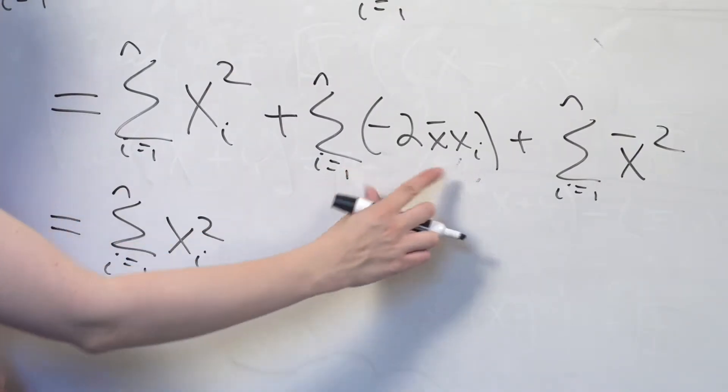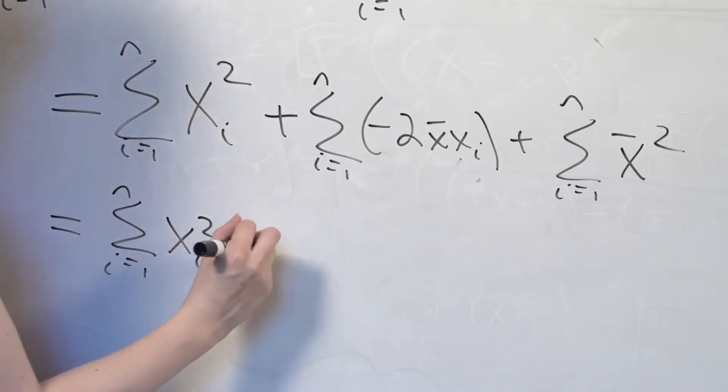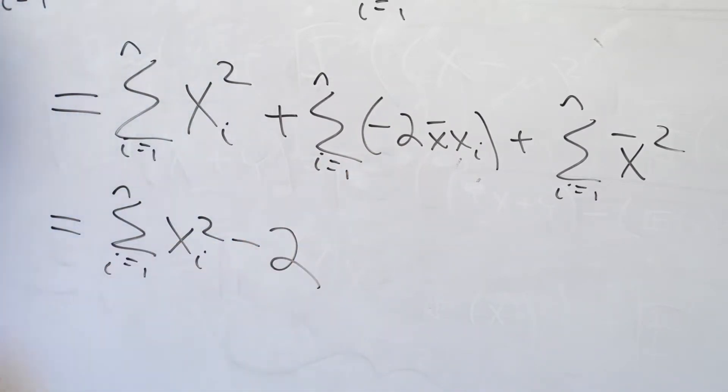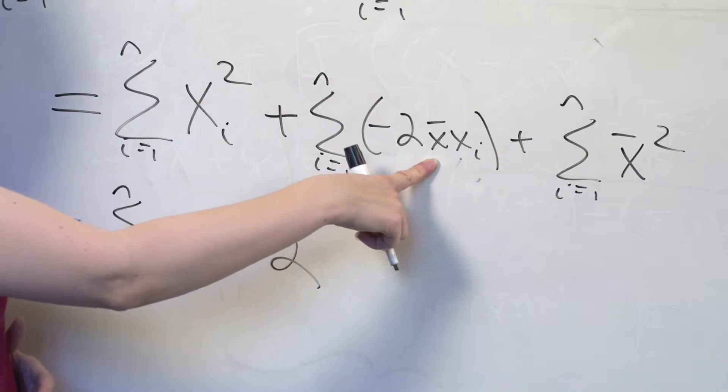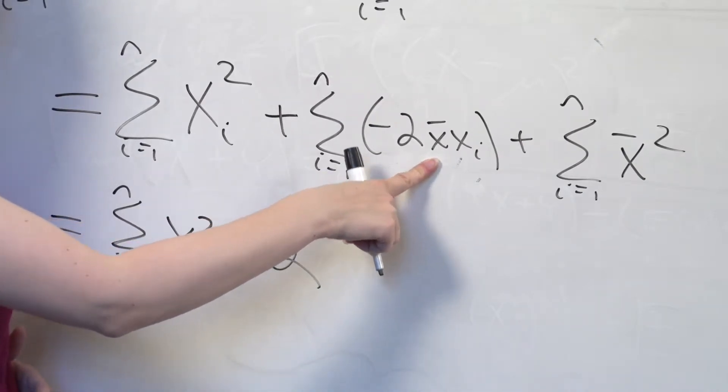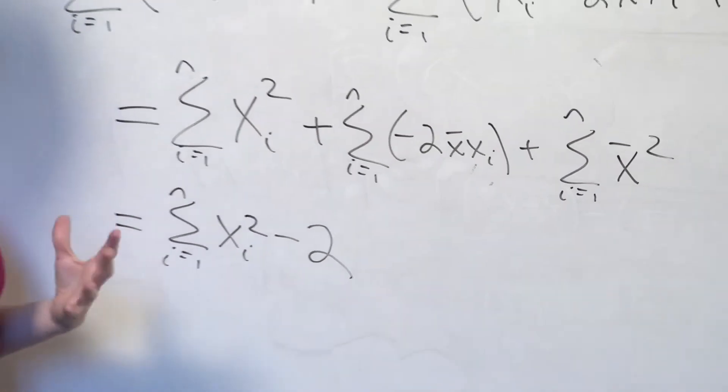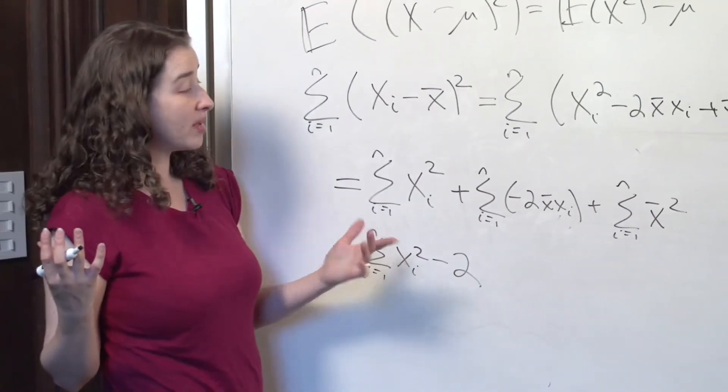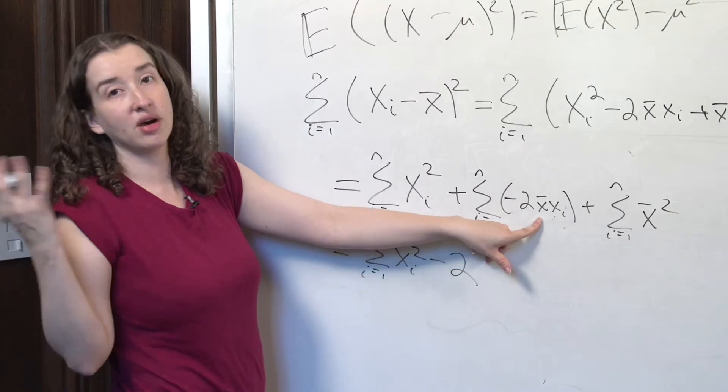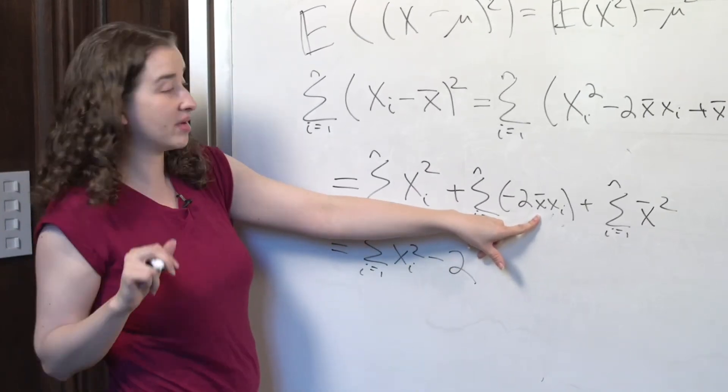Now we get to the second term. We've got a negative 2. That's a constant. That can come right out of the summation. X bar is also a constant in this case because it doesn't have an i attached to it. No matter which unit in the sample I have in mind at the particular moment, if you ask me what x bar is, x bar is always the average over everybody in the sample.